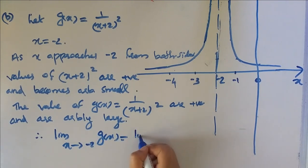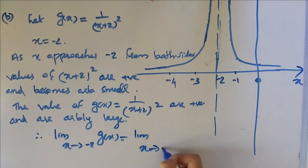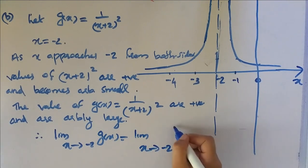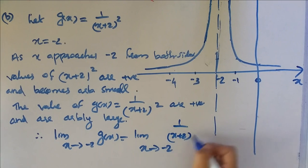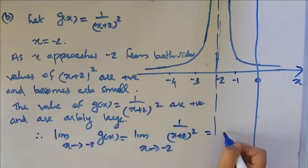Therefore, limit x tends to minus 2 of 1 by (x plus 2) all squared equals infinity.